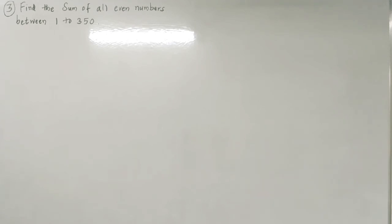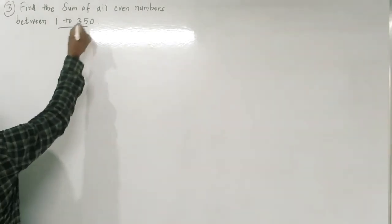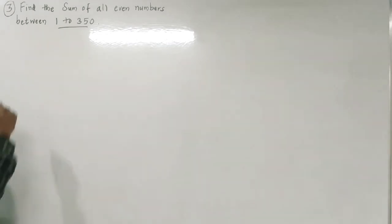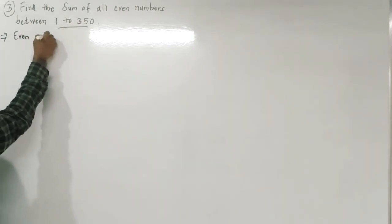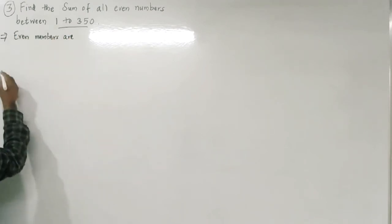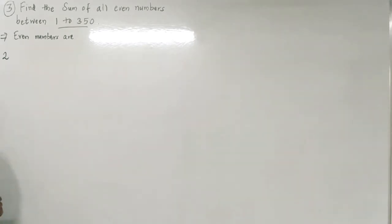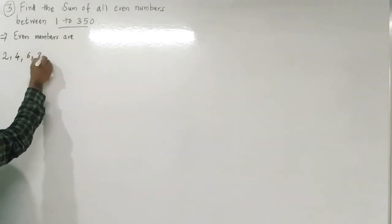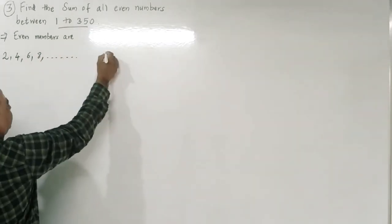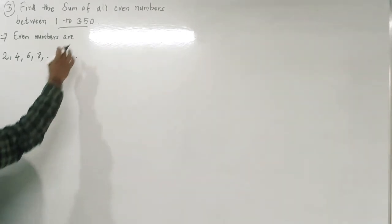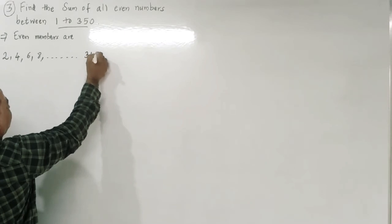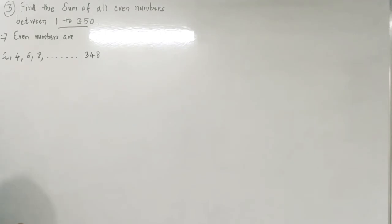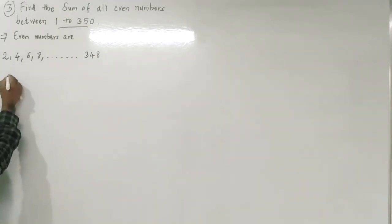Third example: find the sum of all even numbers between 1 and 350. Even numbers between 1 and 350 start at 2, then 4, 6, 8, and so on. Since we need numbers between 1 and 350 exclusively, 350 is not included. The last even number before 350 is 348.